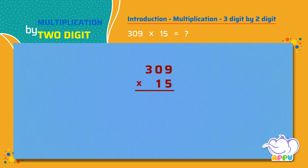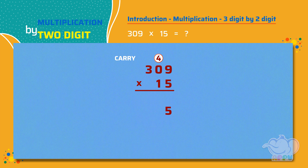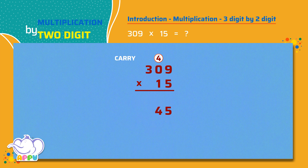First, we multiply the number in the ones place by five, which is nine times five equals 45. We keep five and carry four. We write five in ones place. Next, we multiply the number in the tens place by five, which is zero times five equals zero. Then add the carry to get zero plus four equals four. We write four in tens place.